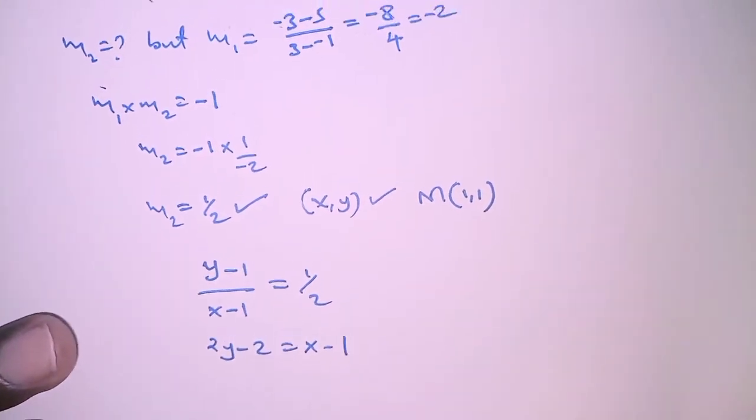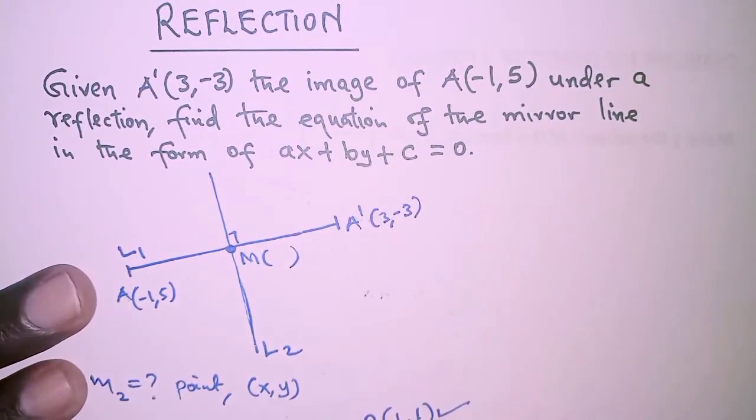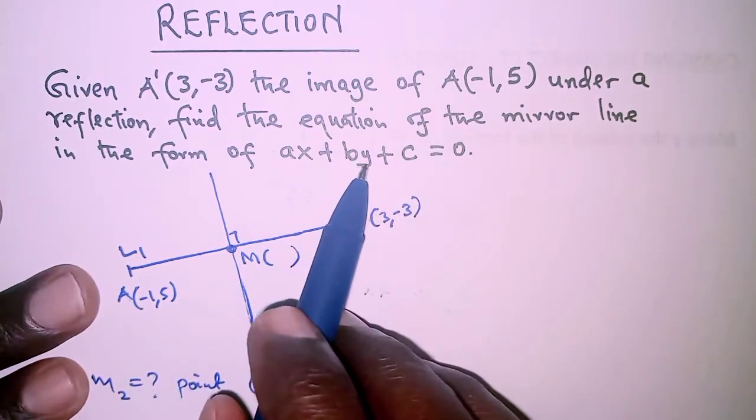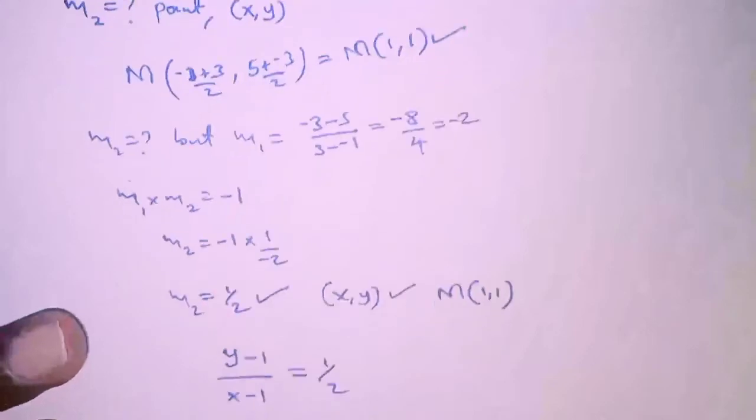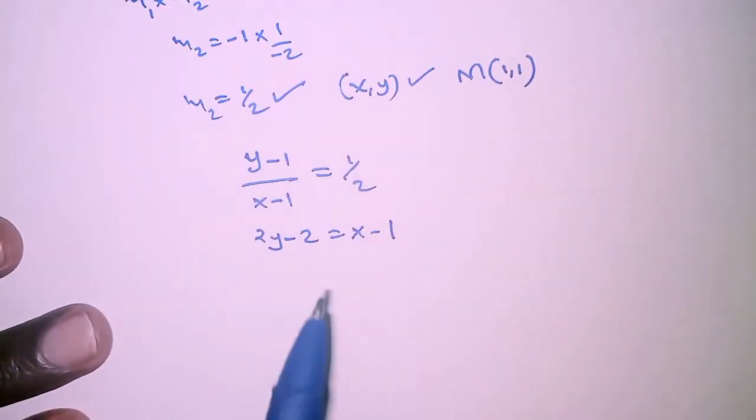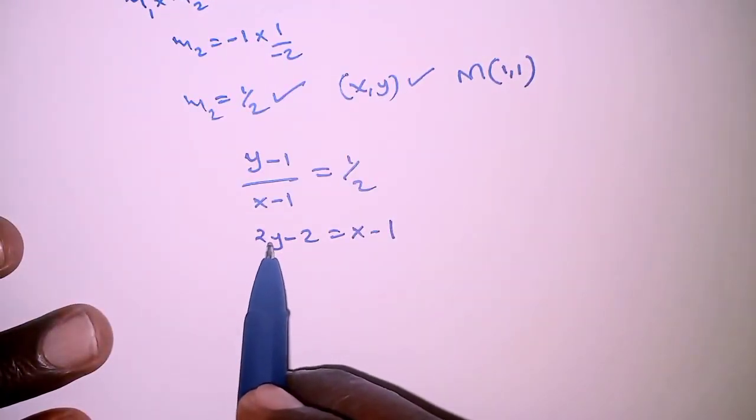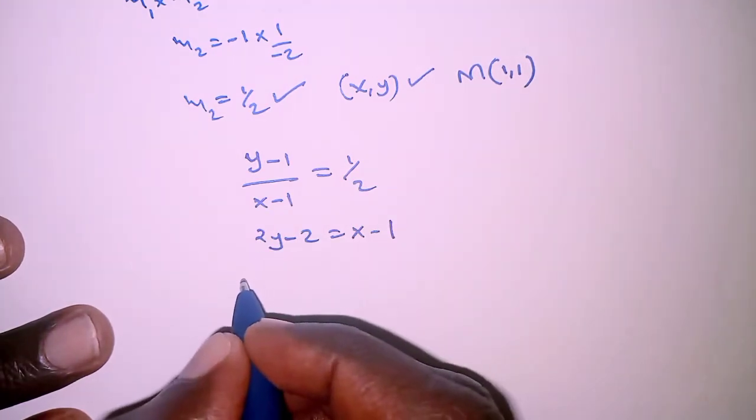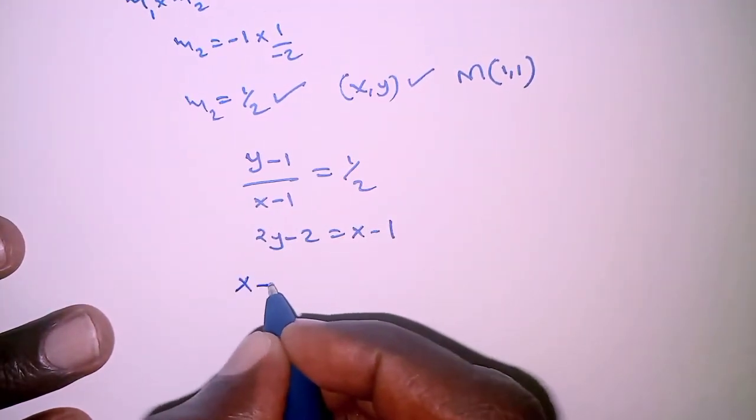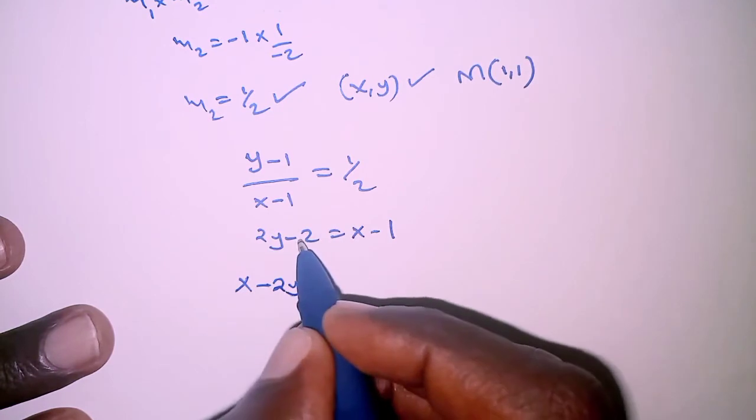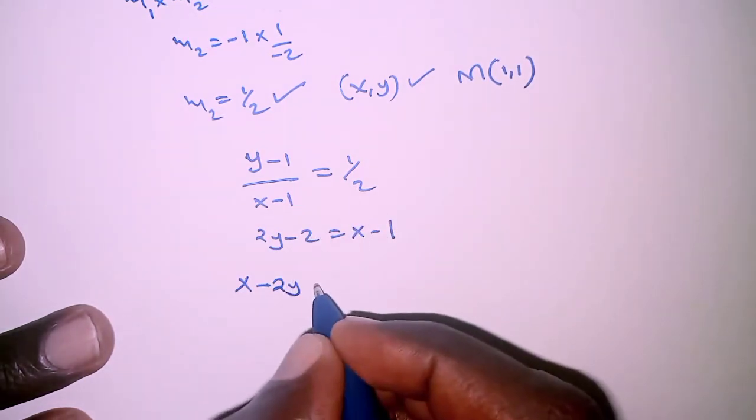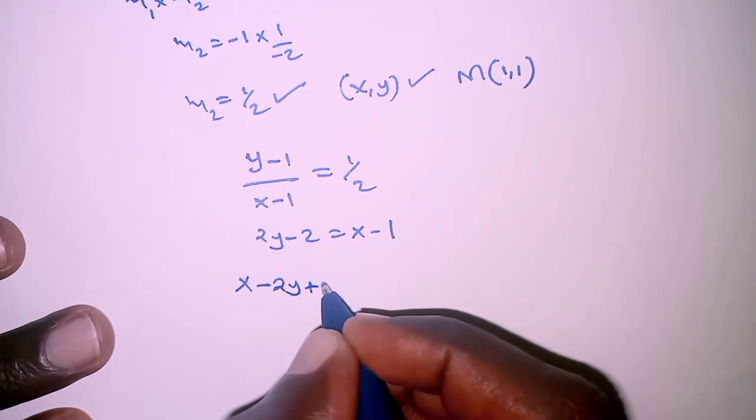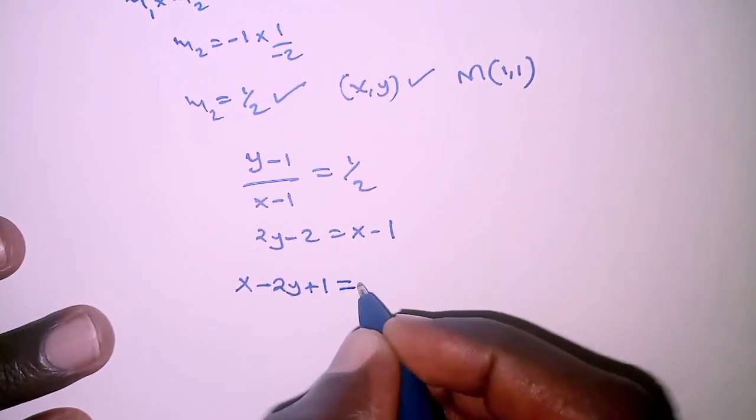And remember we are told to leave our answer in the form ax + by + c = 0. So we'll have 2y and -2 crossing to the right hand side, giving us x - 2y, and -2 when it crosses gives +2 - 1, which is x - 2y + 1 = 0.